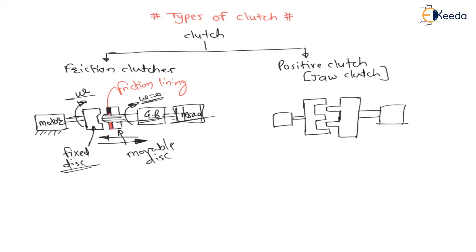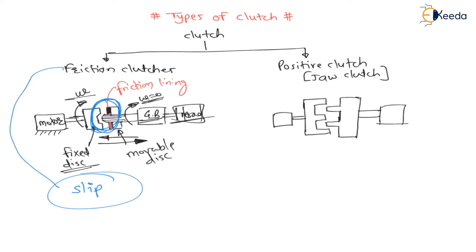But my dear students, as the concept of friction is used here, there can be slip possible between the fixed disc and the movable disc while transmitting power. Therefore, for friction clutches, slip is possible — slip may occur. Hence, they are called negative clutches. Whenever there is slip, it is called a negative clutch.